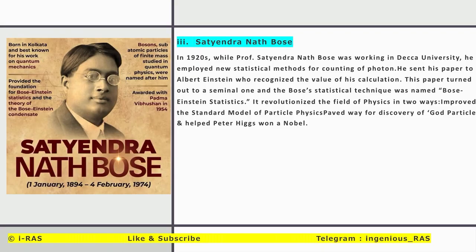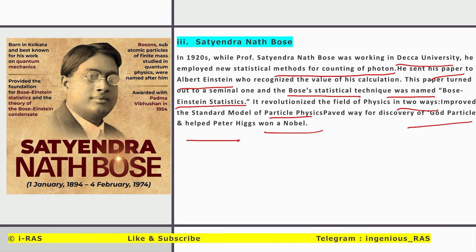Next, Satyendranath Bose — a professor working at Dacca University in today's Bangladesh (then India). He employed a new statistical method for counting photons. He sent his paper to Albert Einstein, who recognized the value of his calculation, and the paper turned out to be seminal. The statistical technique was named Bose-Einstein statistics. It revolutionized physics in two ways: it improved the standard model of particle physics, and paved the way for the discovery of the Higgs boson particle, helping Peter Higgs win a Nobel Prize — though Satyendranath Bose himself was not awarded a Nobel Prize. He was awarded the Padma Bhushan.